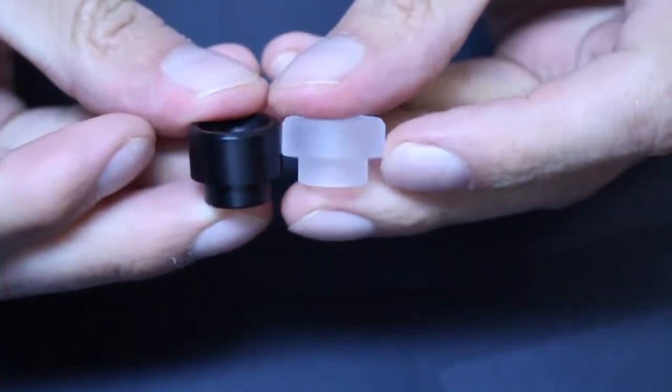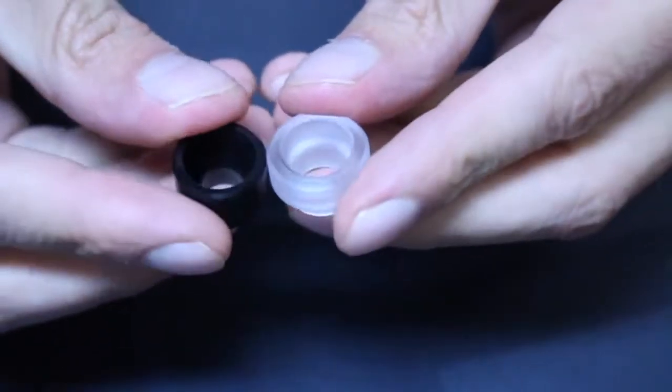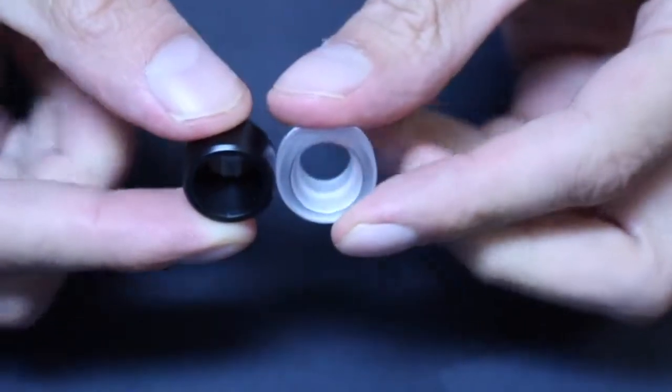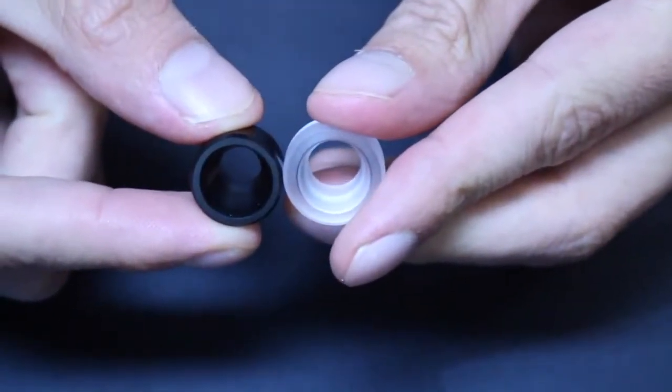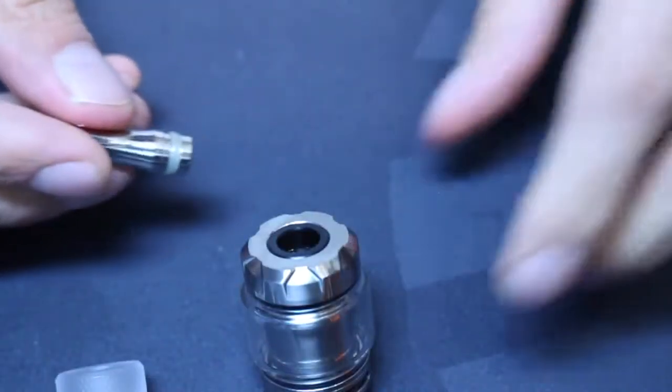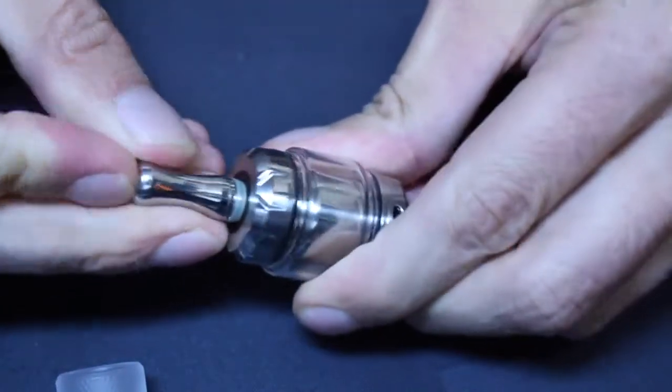You get two drip tips to pick from: one black 510 Delrin tip and a larger 810 acrylic drip tip. The acrylic tip is much shorter than the black one, but the black tip has the same outer diameter so that it fits into that 810 size top cap, which is nice. The accessories bag also comes with a 510 adapter so that you can use other smaller 510 drip tips.